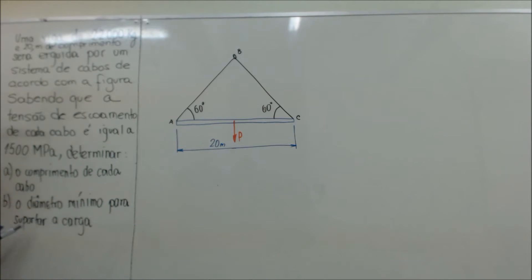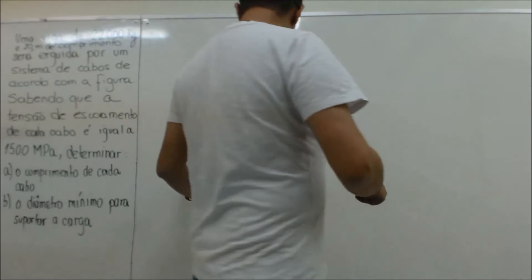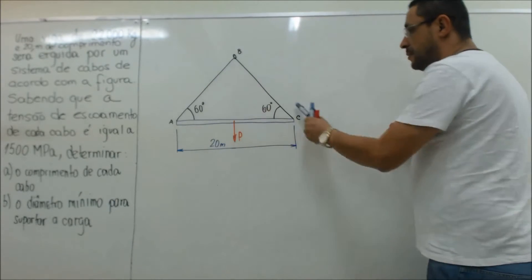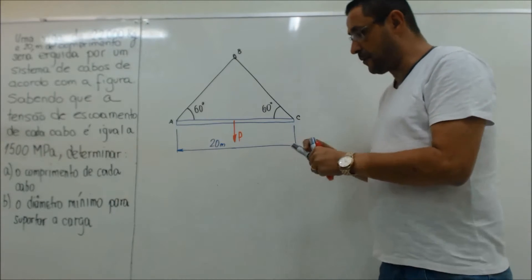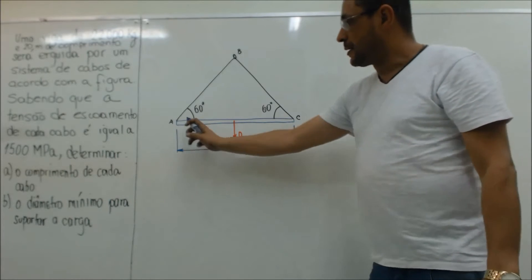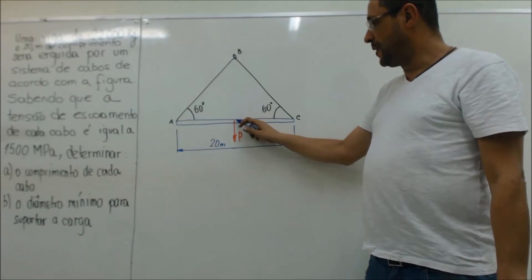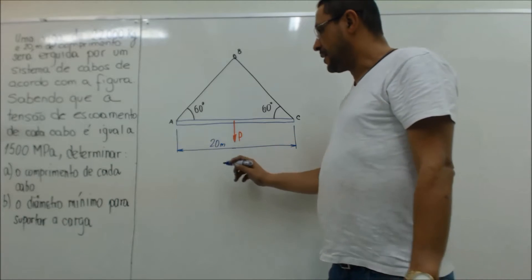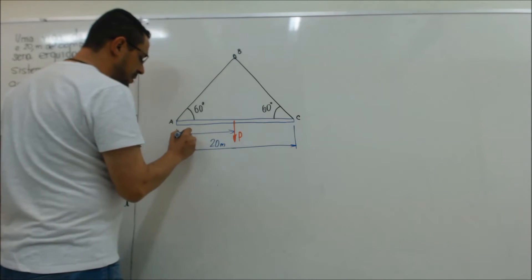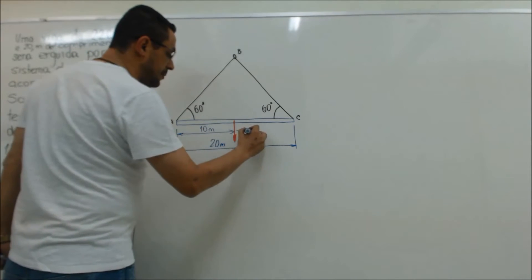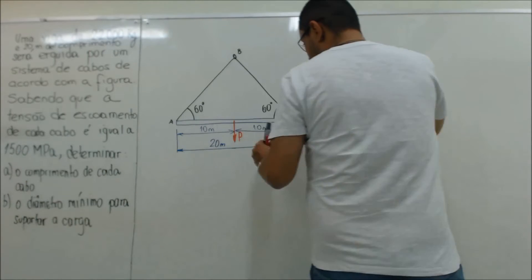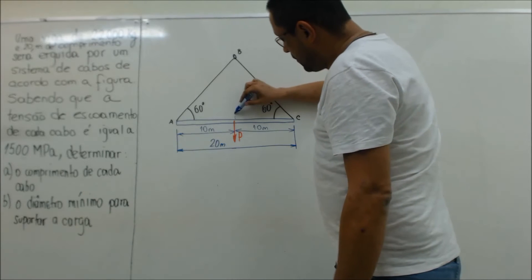Quero saber qual vai ser o comprimento mínimo para poder suportar essa carga. A primeira coisa que a gente vai ter que fazer é descobrir quais são os comprimentos. Então aqui é uma coisa simples e nós vamos usar a trigonometria. Se essa carga — o peso dela — está localizado no centro de gravidade, quer dizer que se o comprimento é de 20 metros, nós vamos distribuir: 10 metros desse lado e 10 metros desse lado.